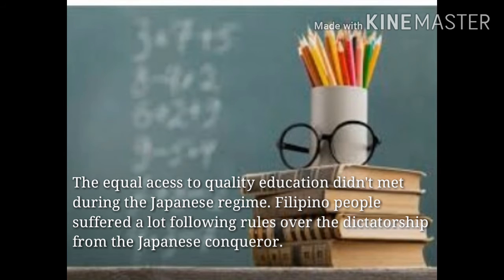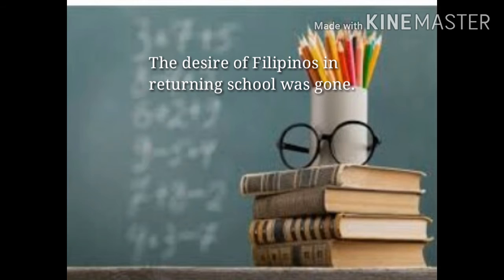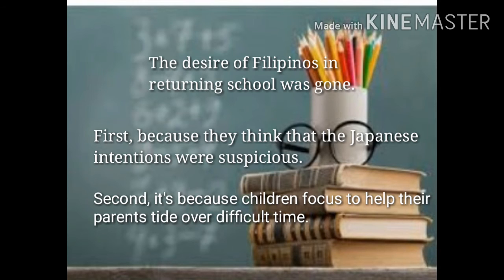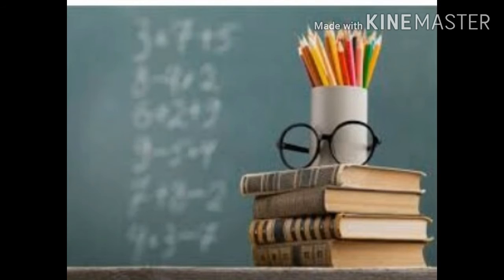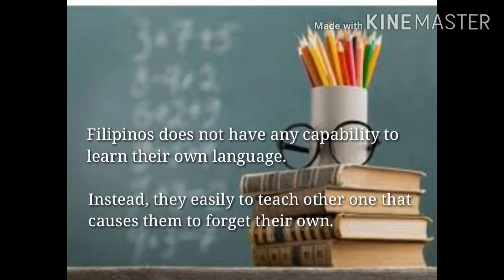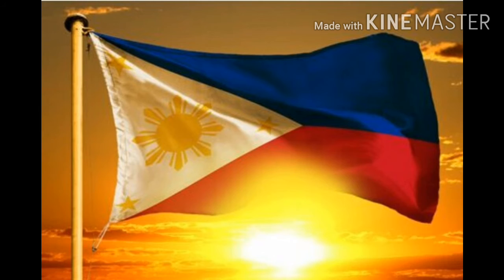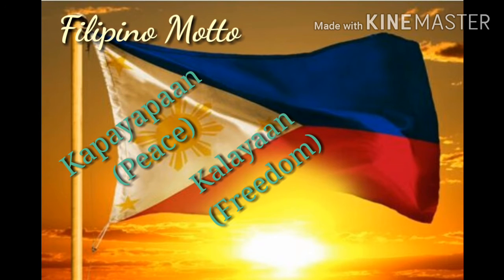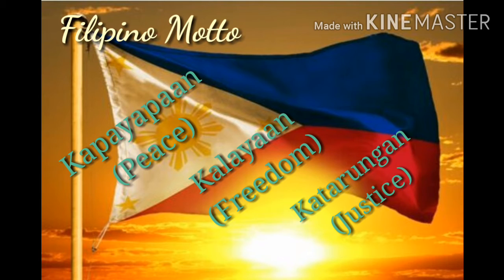Equal access to quality education was not met during the Japanese regime. Filipino people suffered a lot following the rules of the Japanese conquerors. The desire of Filipinos to return to school was gone — first, because they thought Japanese intentions were suspicious, and second, because children focused on helping their parents through difficult times. Filipinos were also losing their capability to learn their own language, as they were being taught another, causing them to forget their own.